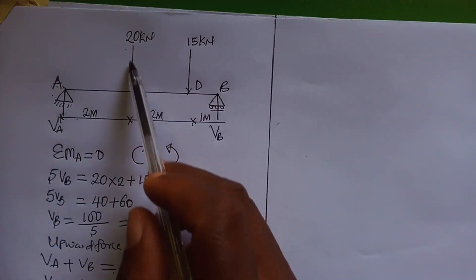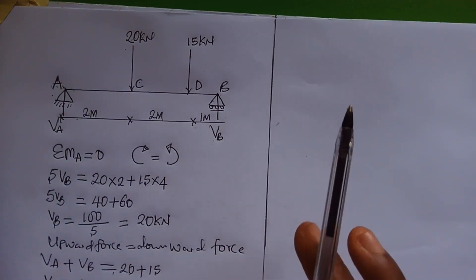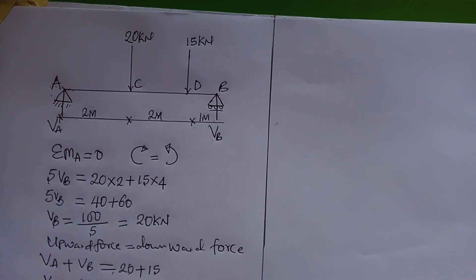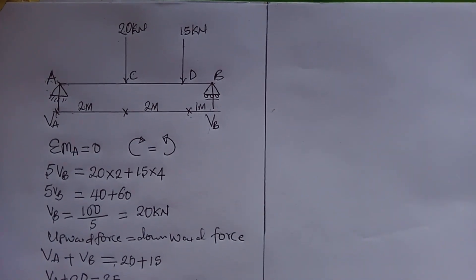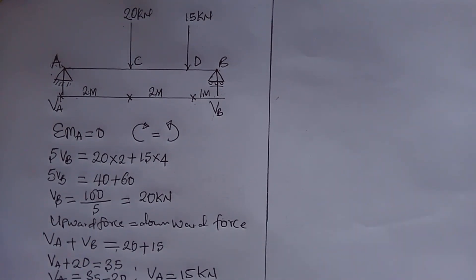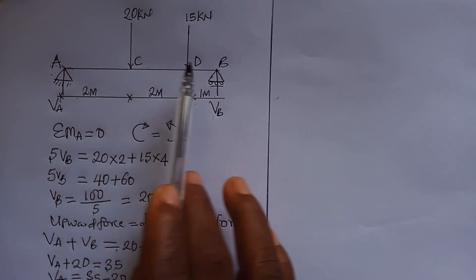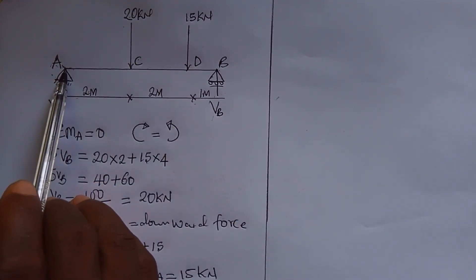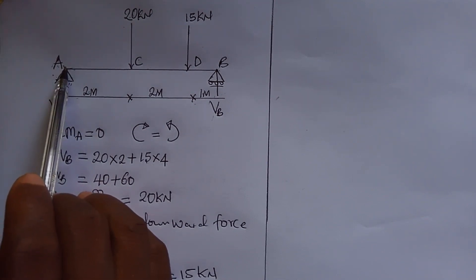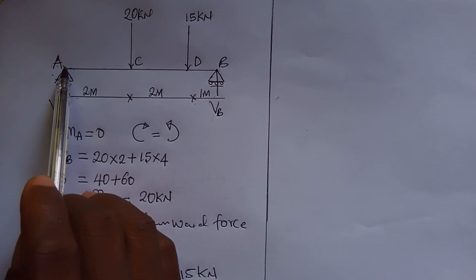Now we should draw the shear force and bending moment diagram. At this point we are going to take a unique step: we're going to go joint by joint. A joint is where two or more things meet. The first joint at point A is going to be overlapped, so let's go to the next joint, which is joint C.